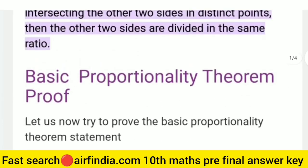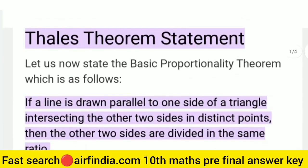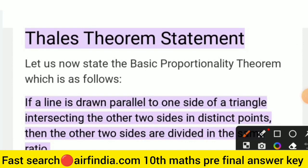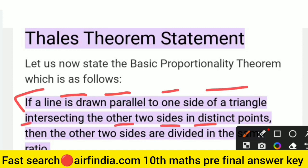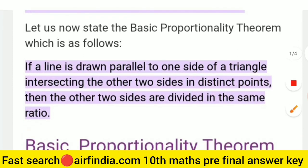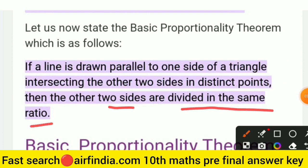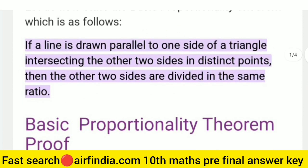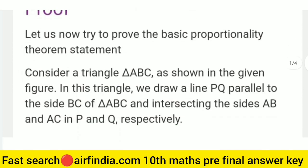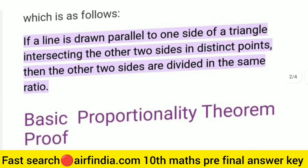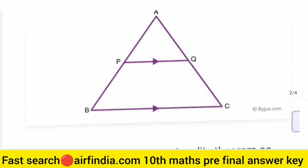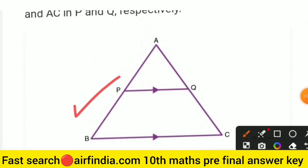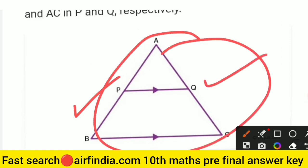The next question: state the Basic Proportionality Theorem (Thales' theorem). Remember, you are only asked to state the theorem, not prove it. Statement: If a line is drawn parallel to one side of a triangle intersecting the other two sides in distinct points, then the other two sides are divided in the same ratio. That is your statement and full answer. Also make sure to draw a diagram.